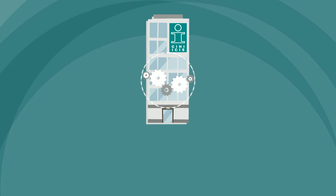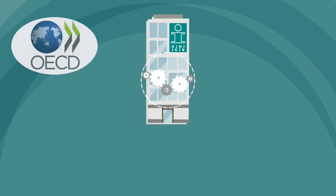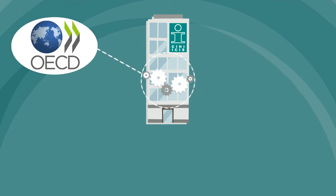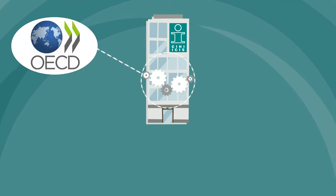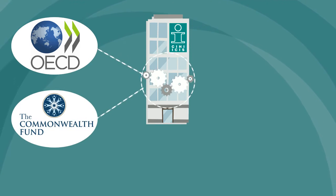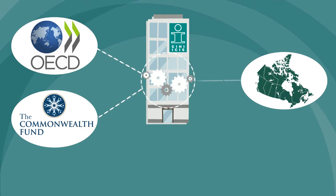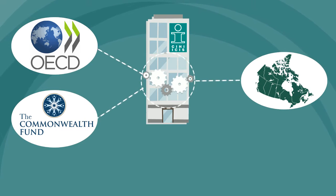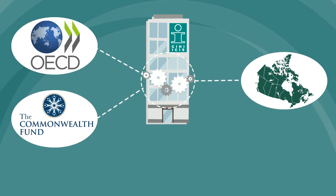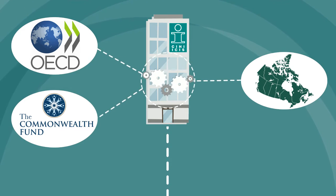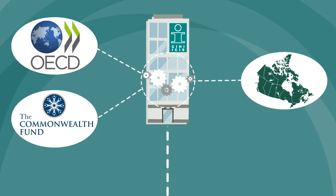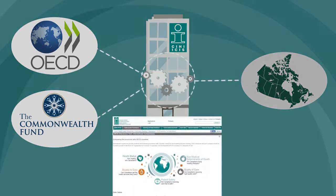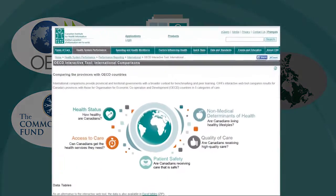CIHI collects international data from the Organization for Economic Development, also known as the OECD, and the Commonwealth Fund. CIHI also collects provincial data calculated using the corresponding methodology. Once all international and provincial data is collected, the data is fed into the e-tool to allow for easy comparisons between provinces and OECD countries.